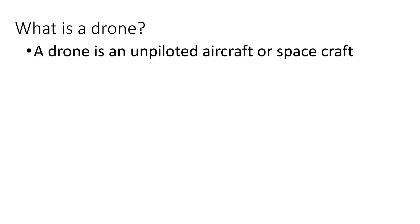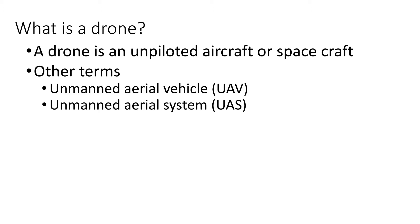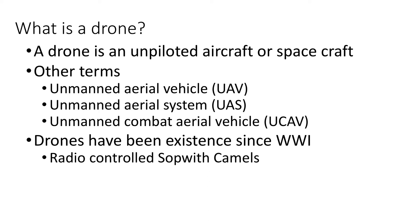So, what is a drone? A drone is simply an unpiloted aircraft or spacecraft. There are other terms that have been used instead of small unmanned aerial system or drone, including unmanned aerial vehicle (UAV), unmanned aerial system (UAS) — which is now the preferred term used by the Department of Defense — and a few years ago, drones used by the DoD in combat were called unmanned combat aerial vehicles.